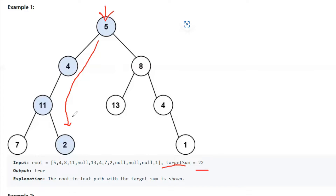The question is how we should do this, because in the path we follow we should be adding different values. One way is to take a variable, pass it along, and keep adding the current root value. Alternatively, we can take the target sum value — say 22 — and keep subtracting as we go deeper into the tree.